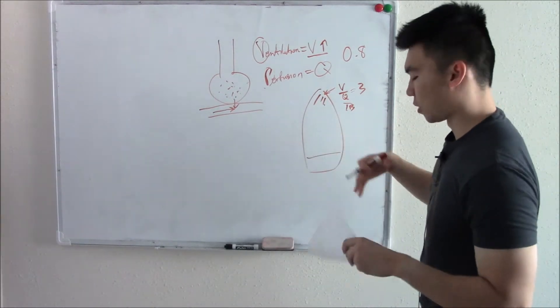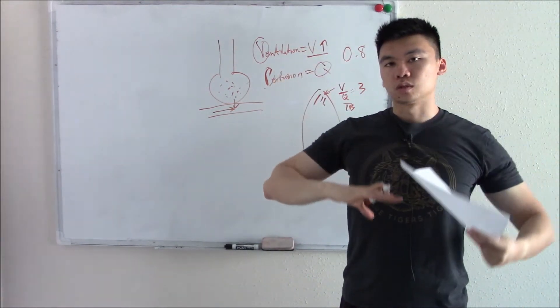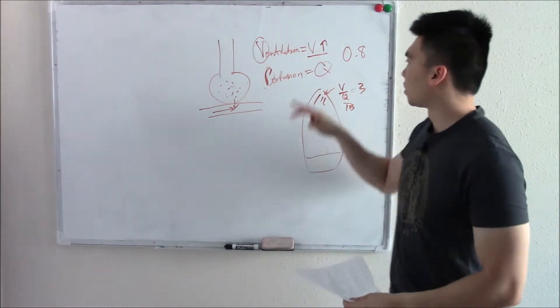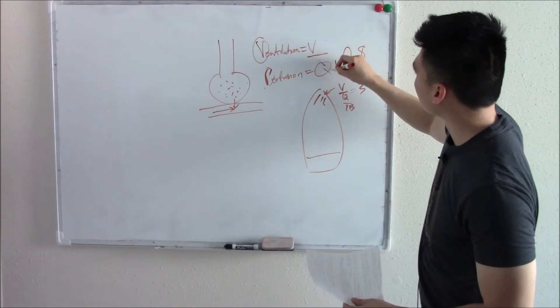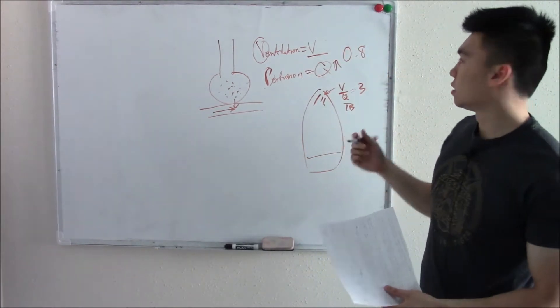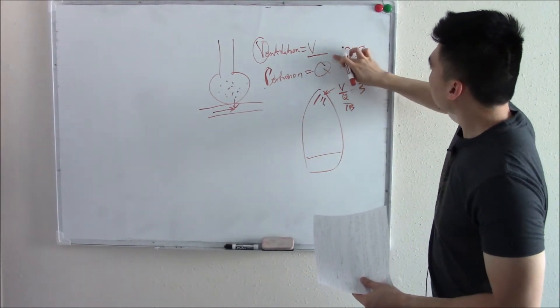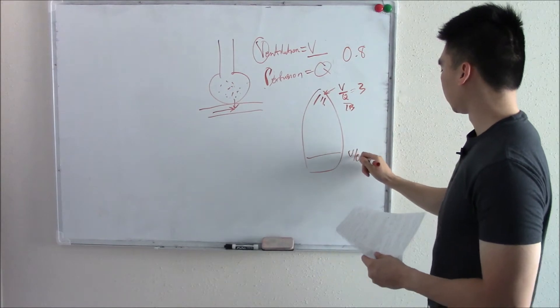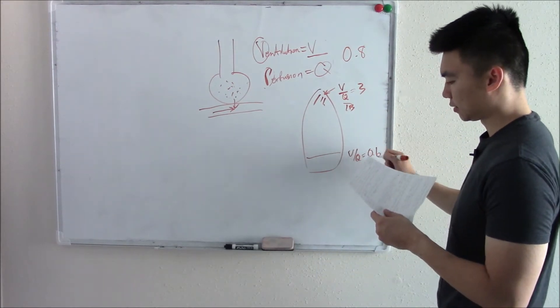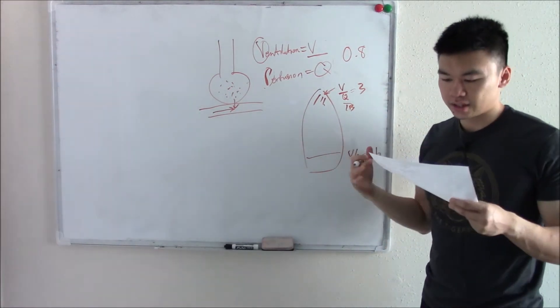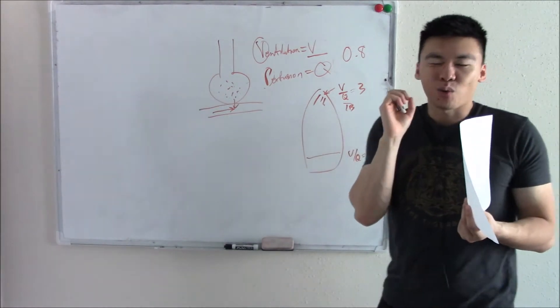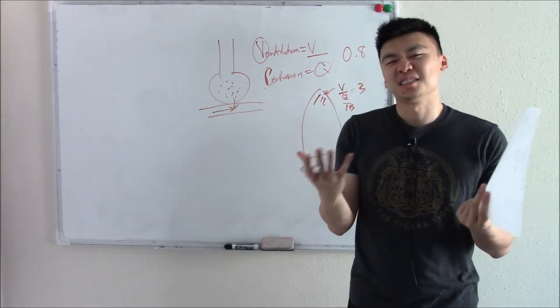At the bottom of your lung, gravity pulls blood down. You have a ton of perfusion. What does that do to your ratio mathematically? Decreases your ratio. So VQ down here is around 0.6. And if you average everything out, you get 0.8. Again, not that one that we want, but close enough.